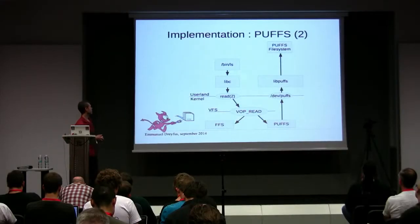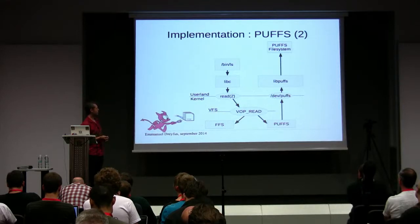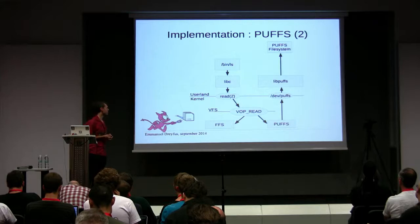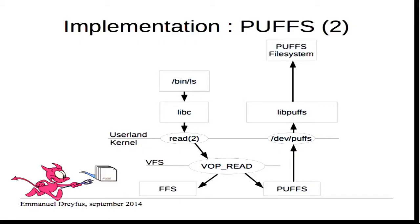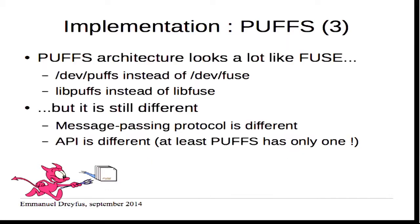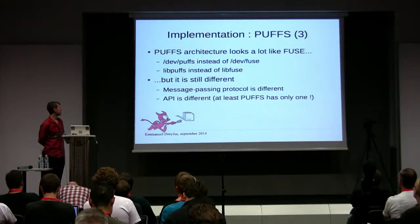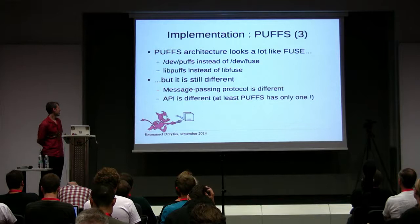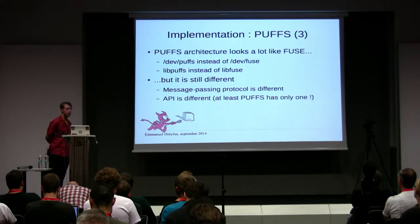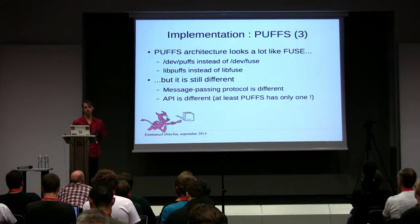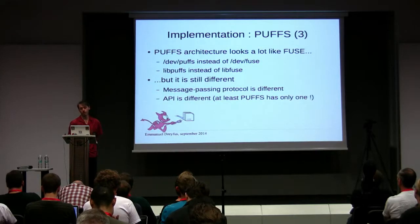PUFFS works exactly like FUSE: your process does a system call, goes to the VFS, which knows it's talking to a PUFFS file system, and the request reaches userland through /dev/puffs. There is only one API, which seems more reasonable. The name of the device is /dev/puffs instead of /dev/fuse, and the library is libpuffs instead of libfuse. Despite the similarity, they are still very different — the message-passing protocol and the API are different — but at least for PUFFS there is only one API.